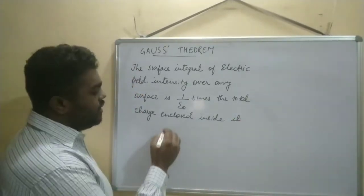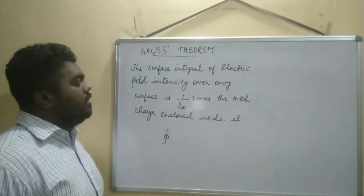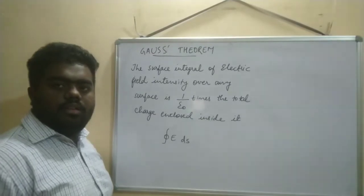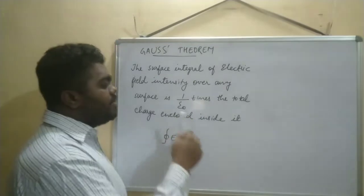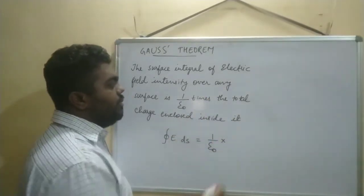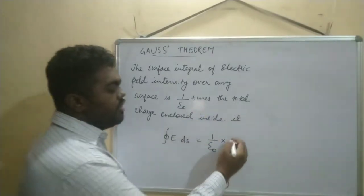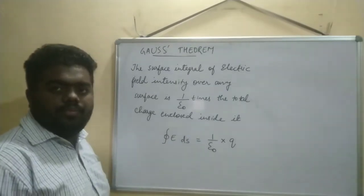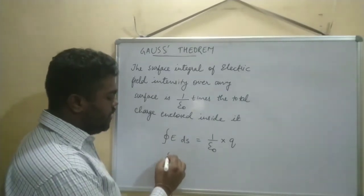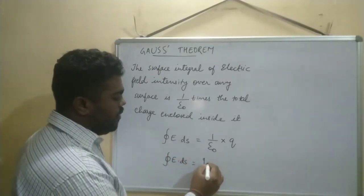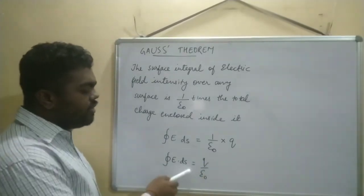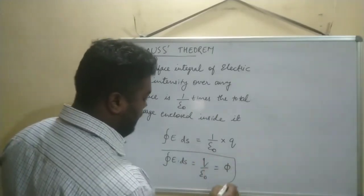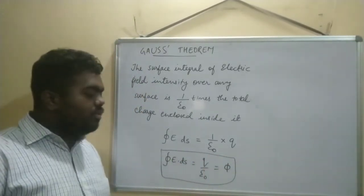The closed surface integral means this symbol: ∮. The closed surface integral of electric field intensity E over any closed surface dS equals 1/ε₀ times the total enclosed charge Q. So the formula is ∮ E · dS = Q/ε₀. And we know this equals Φ, so we can write Φ = Q/ε₀. This is Gauss's theorem.